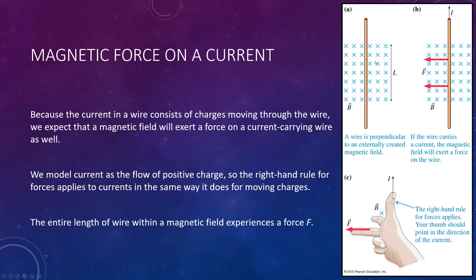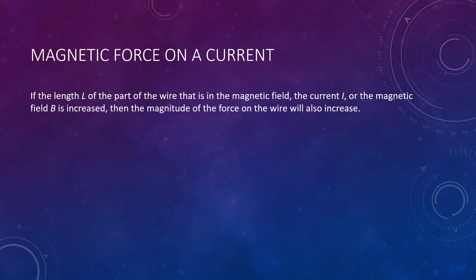If you increase the magnetic field strength, you're going to increase the force exerted by it. And if you increase the current in the wire, you will experience a stronger force as well. So all of these things are proportional to magnetic force.